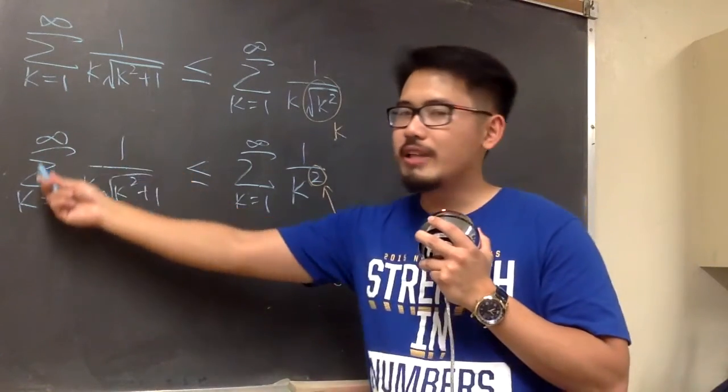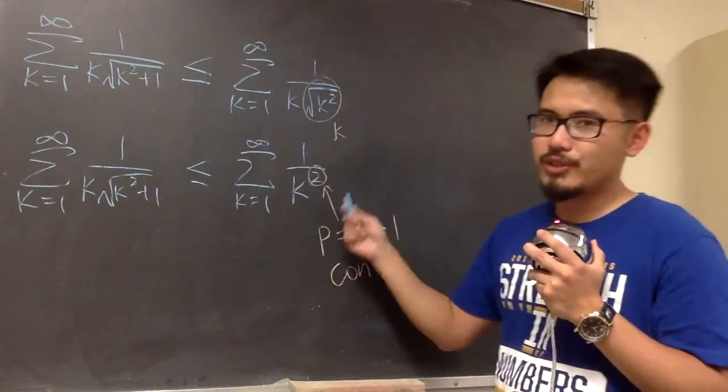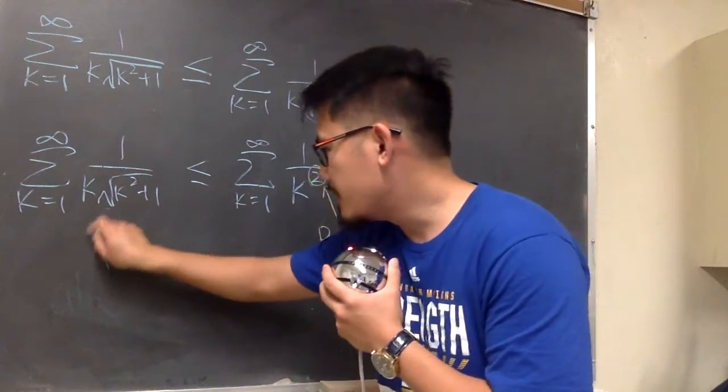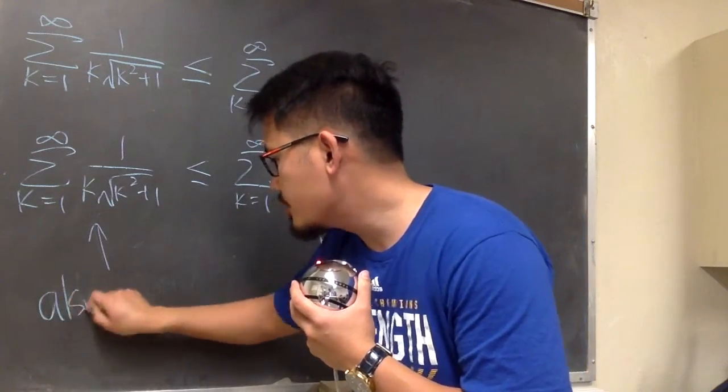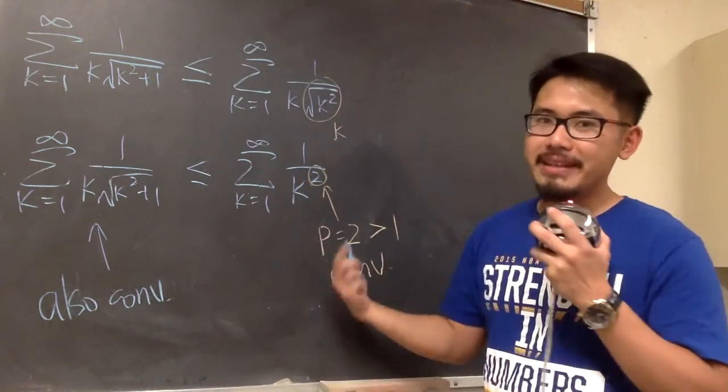Well, I just showed you that this right here is less than a convergent. So we can come here and say, this right here also converges, right? And this is by inequality.